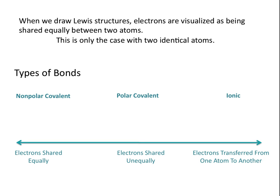The type of bond you have can theoretically fall anywhere in this range. It can be completely non-polar covalent when you have two identical atoms with electrons shared equally, varying degrees of electrons being shared unequally, all the way through having electrons transferred from one atom to another, in which case you would have an ionic bond.